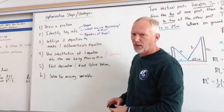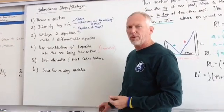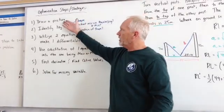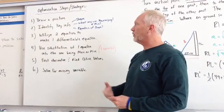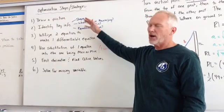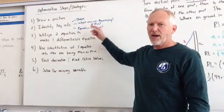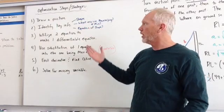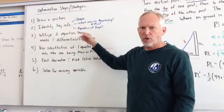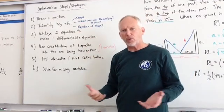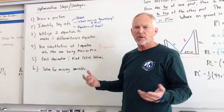Let's look at some of the strategies that we can review once more. Number one, whenever we approach an optimization problem, we want to first start off by either drawing a picture or identifying some of the key information. So what is some of that key information? The shape, right? What is the shape that we're looking for? Is it triangle, rectangle, square, cube, cone, something?